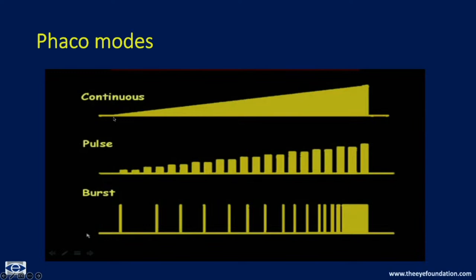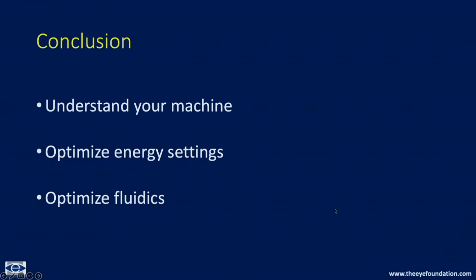In normal continuous linear mode, power starts from the minimum and goes to the preset maximum as you press the foot pedal. In pulse mode, power increases per pulse but duty time does not change. In burst mode, power remains the same per pulse but duty time continues to increase. In conclusion, you need to understand your machine and optimize your settings and fluidics to achieve your ideal phaco case.